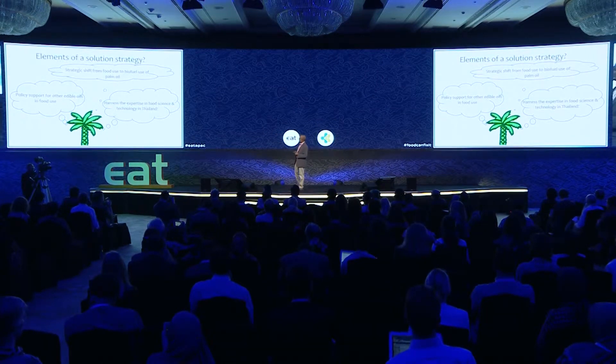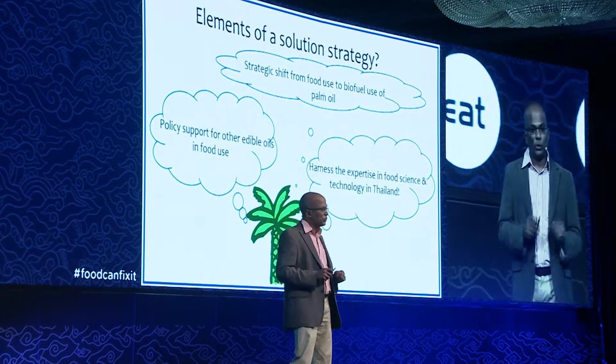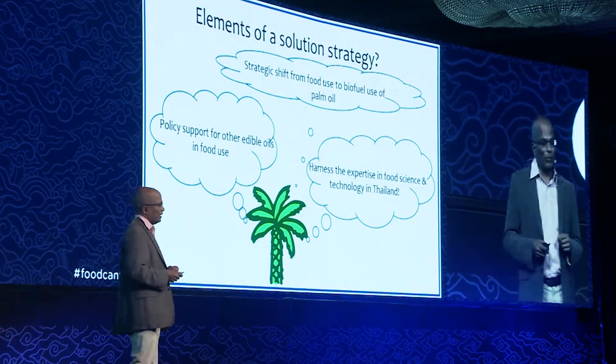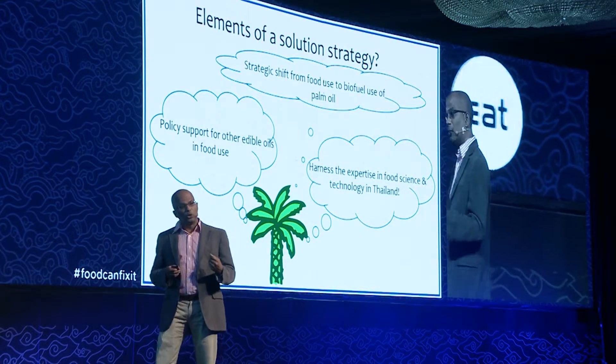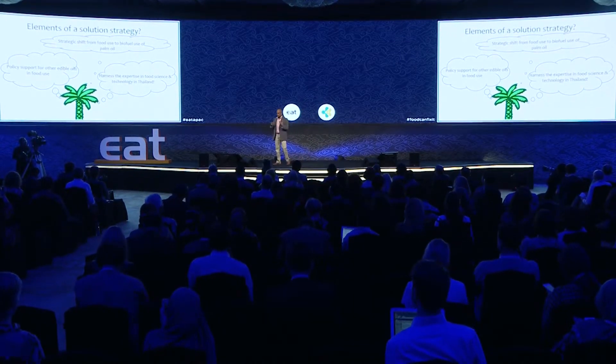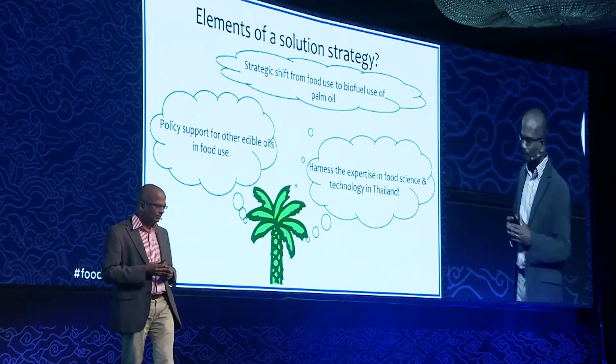What would be the elements of a solution strategy given all these constraints? One thing we think could be important is a strategic shift in the long term from food use of palm oil to biofuel use of palm oil, which is already underway in Thailand. Can the government incentivize this further so that you retain the economic vitality of the sector while avoiding some health repercussions? In parallel, can we support the use of other edible oils in food use? There is a lot of momentum around rice bran oil and indigenous oils, with food technologists developing fantastic new applications. And finally, harnessing Thailand's incredible expertise in food technology — it has invested for a long time in food technology solutions — can that be stepped up even further?